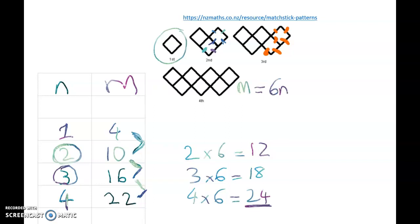And you can see that each time, I'm going to be two off. And in particular, I'm going to be two matchsticks too big, because I want to end up with four, but I get six. I want to end up with 10, but I get 12. And I want to end up with 16, but I get 18. So what do I have to do? Well, I have to take away two matchsticks. So let's try this. 6n take away two.